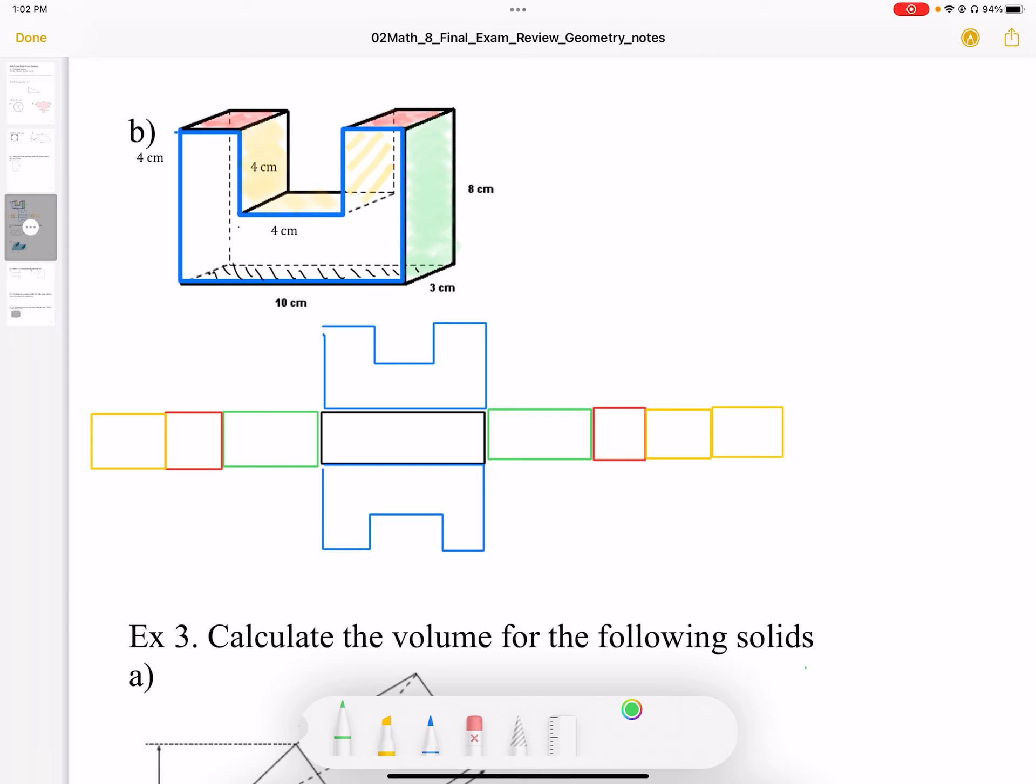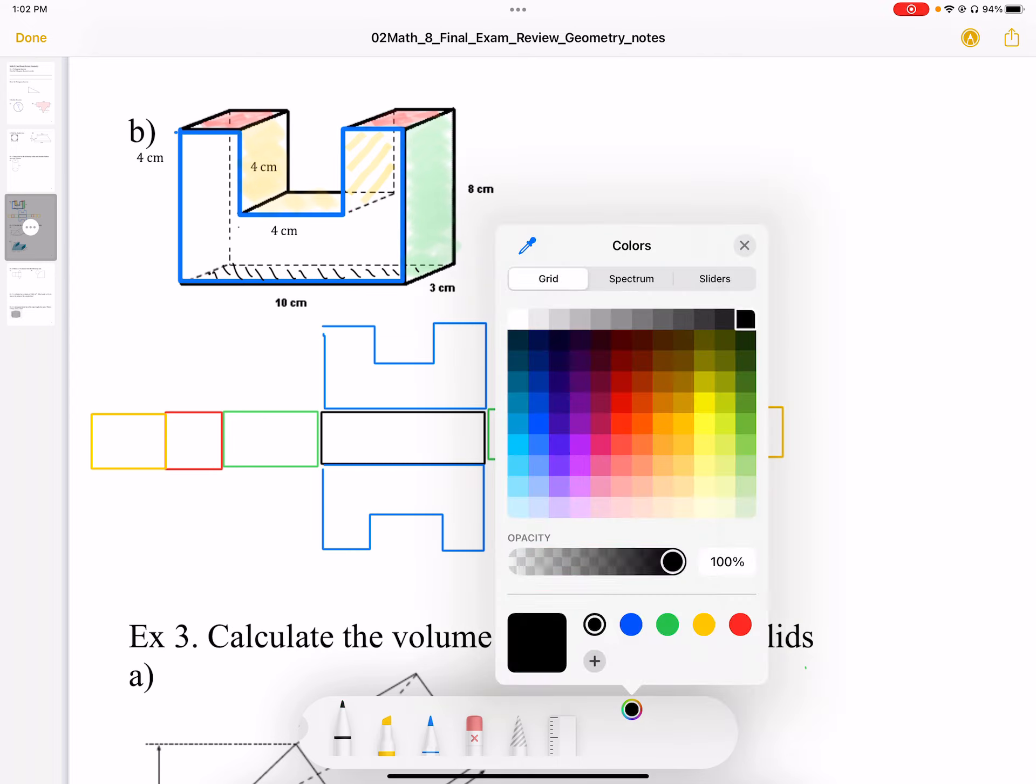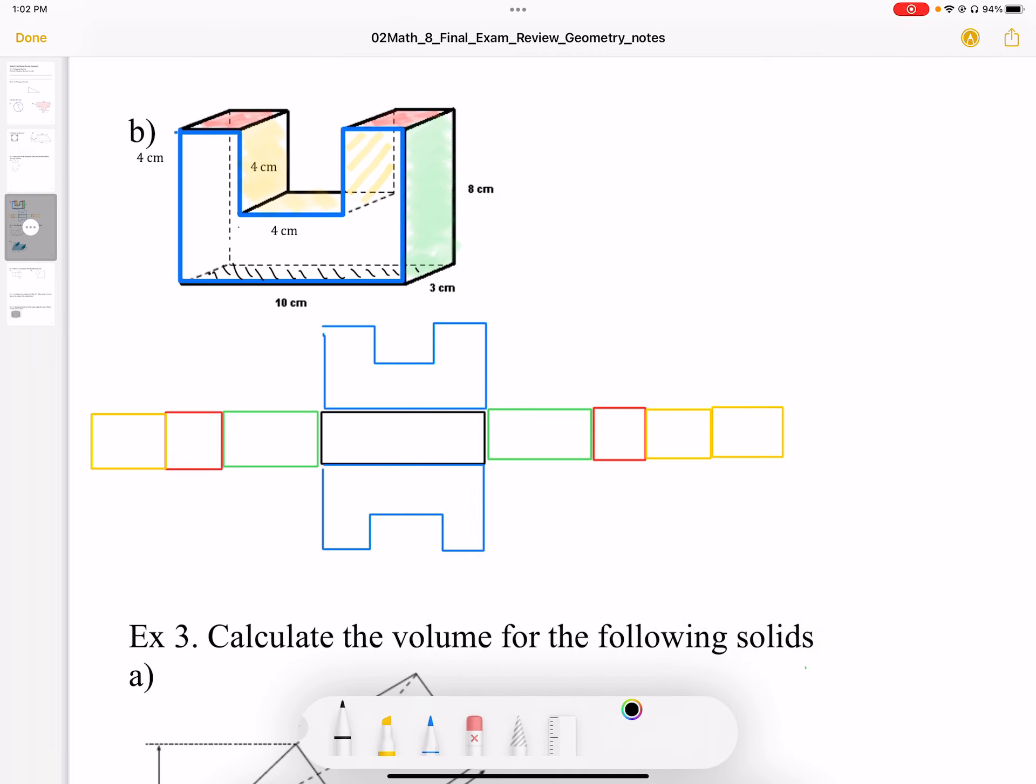So then we're going to calculate the different areas of each of these parts. We're going to first start with the base. The base is going to be 10 by 3, so that's going to be 30 centimeters squared here.